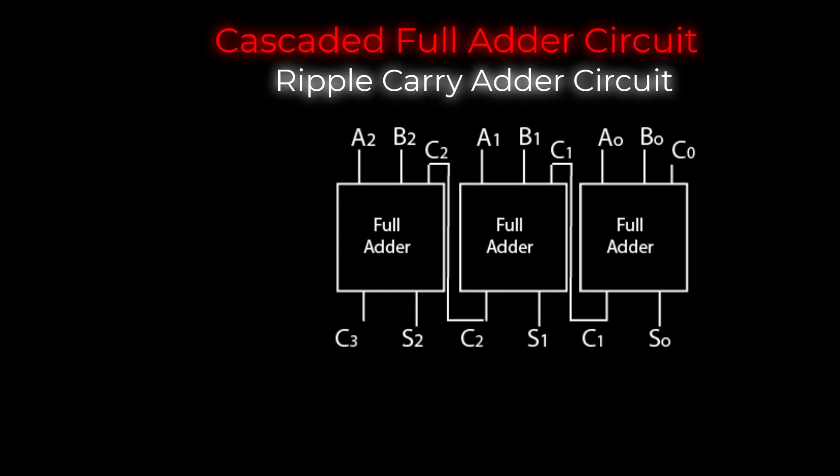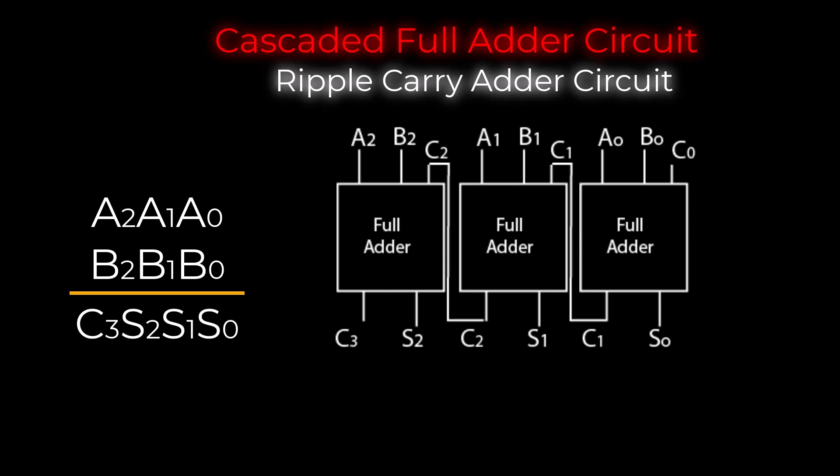In the block diagram shown on screen, two three-bit binary numbers are being added using three cascaded full adder circuits. These three full adders produce the final sum result from three separate sum outputs. The carry out of each stage is directly connected to the carry in of the next more significant adder circuit.